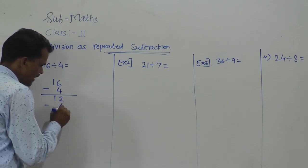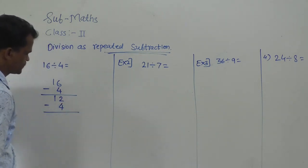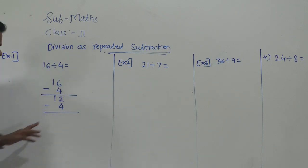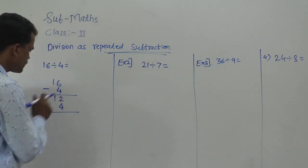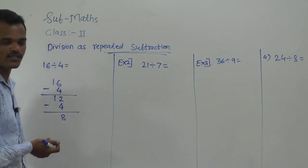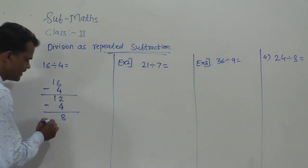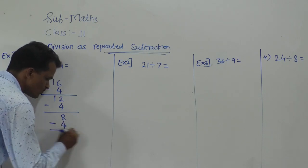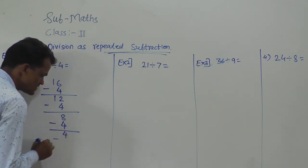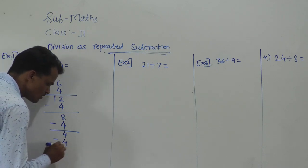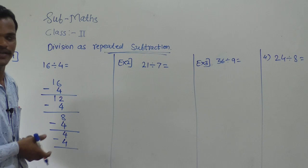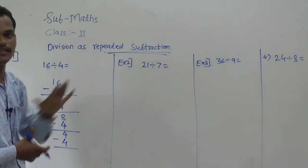Then again you have to subtract 4 — every time you have to subtract the divisor, here 4. So, 12 minus 4: you can use backward counting, the answer is 8. Then again subtract 4: 8 minus 4 is 4. Then again subtract 4 — so we are subtracting again and again repeatedly, so it is called repeated subtraction.